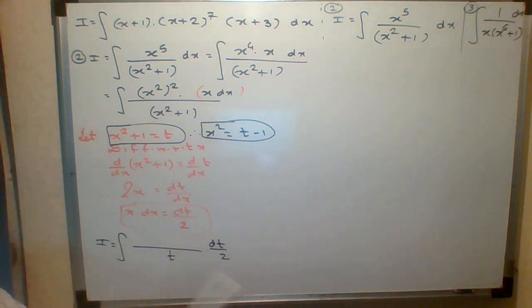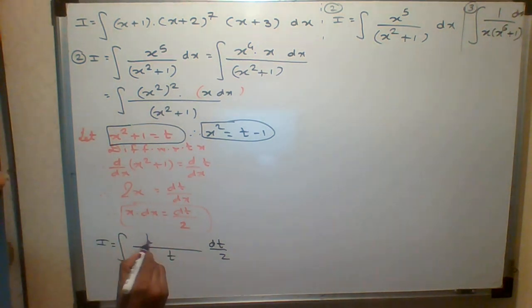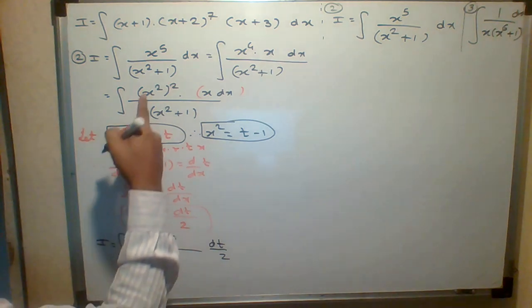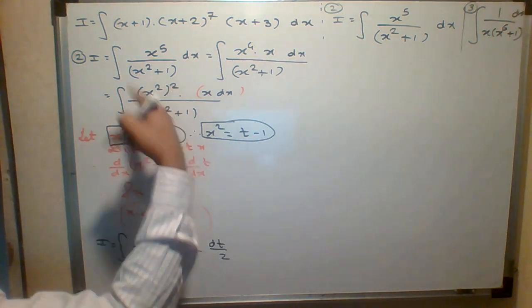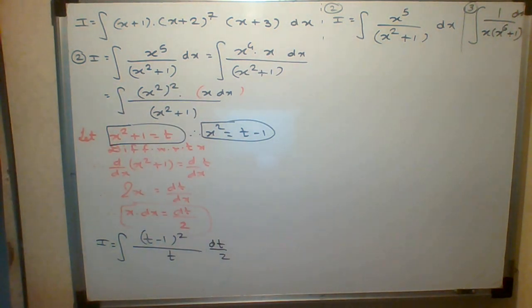So x squared is t minus 1, but we have x squared squared. That's why it's t minus 1 the whole square. Now we will solve this. It will be easy to solve.